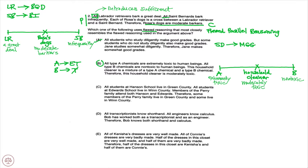Answer C: All students at Hanson School live in Greene County. All students at Edwards School live in Wynn County. Members of the Perry family attend both Hanson and Edwards. Therefore, some members of the Perry family live in Greene County and some live in Wynn County. C is actually a valid argument, so it clearly cannot be the answer — we are looking for a flawed argument. C is eliminated.